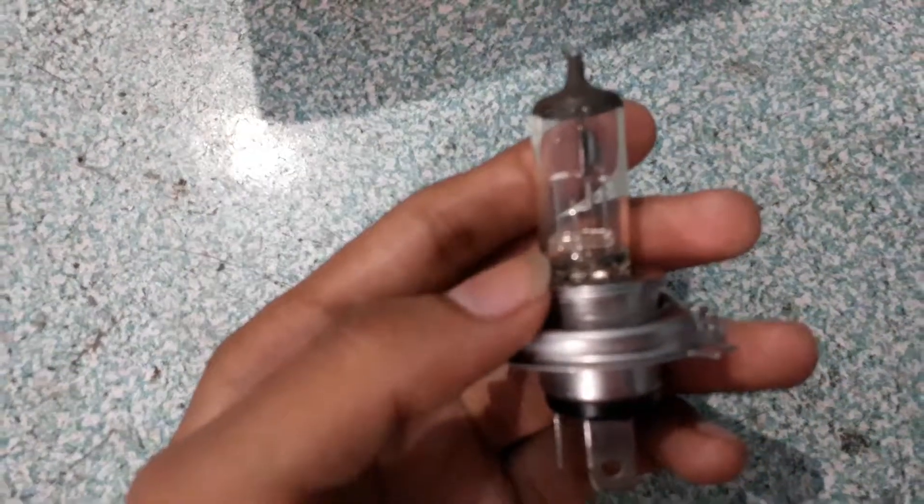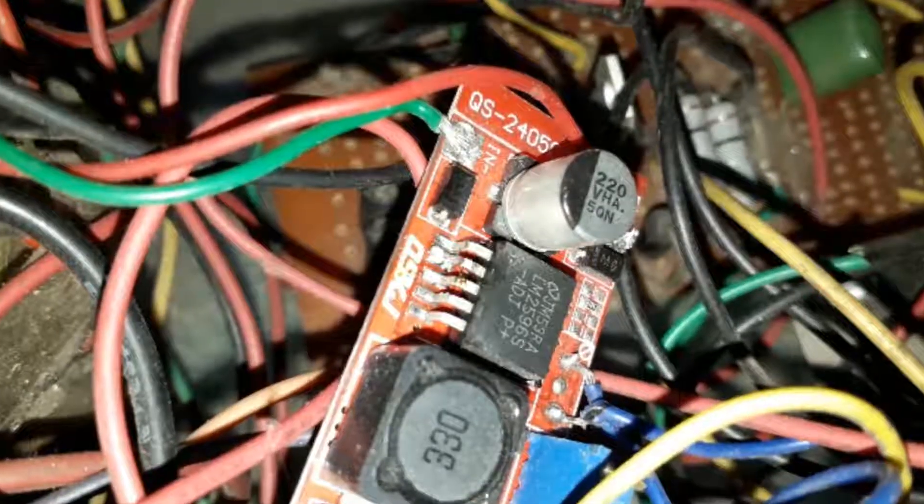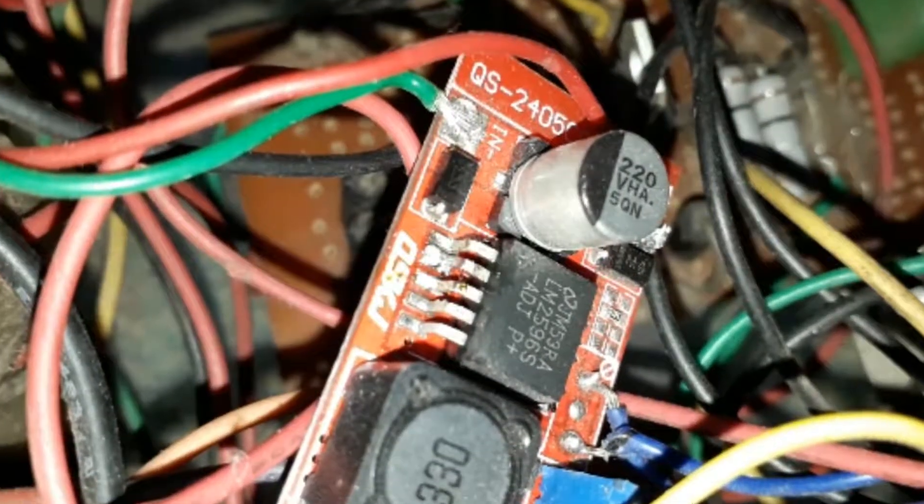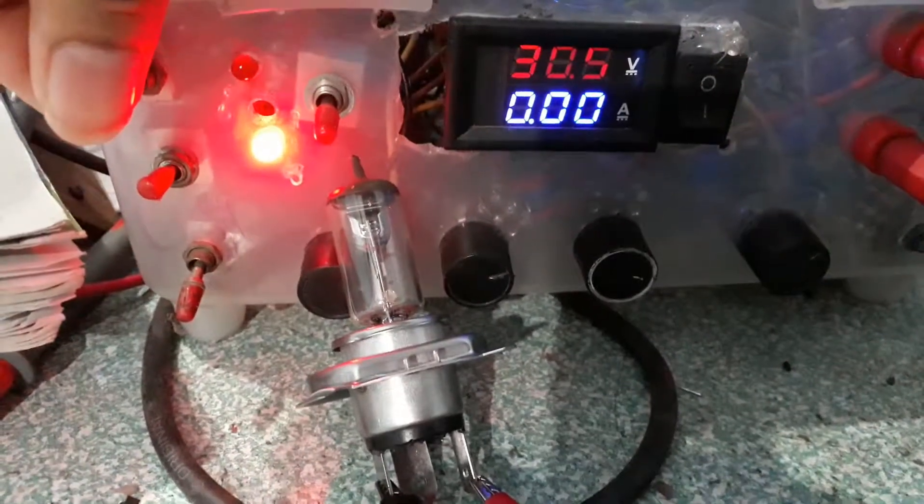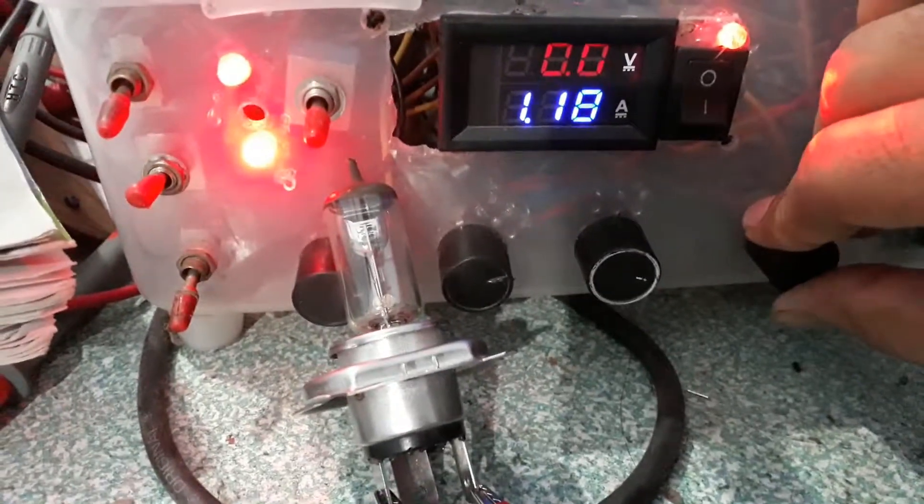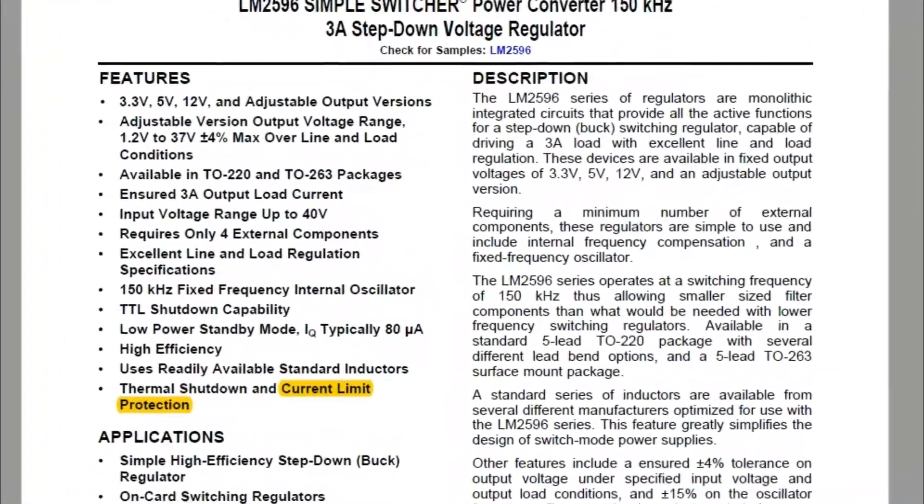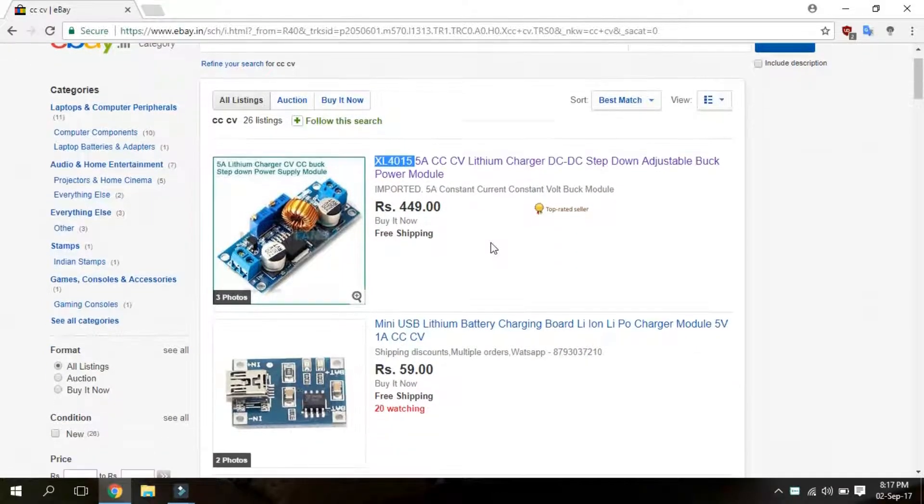Sometimes you need to power something which draws higher current, like a car headlight bulb. Now my power supply, which is based on the LM2596, cannot deliver that much current. When I try to go above 3A it shuts off because of its internal current limit protection. Now you can buy buck converters online like this XL4015 which can deliver up to 5A, but we will make our own.